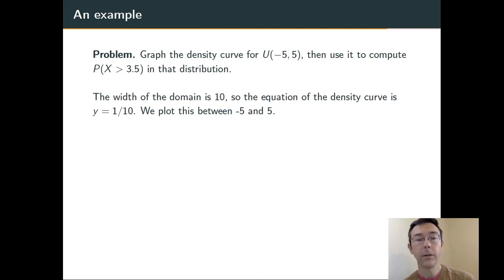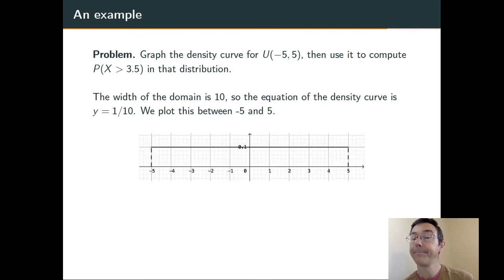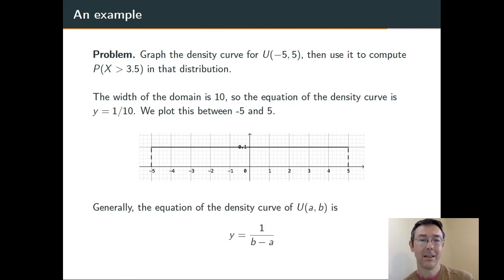So the width of the domain here is 10 from -5 to 5, so the equation of the density curve has to be y = 1/10. There it is. The width is 10, the height must be 1/10 if we're going to have an area of 1. A bit more generally, if we're talking about a uniform distribution on (A,B), then the height of the rectangle is going to have to be 1/(B-A), 1 over the width of that rectangle. That way when I multiply width by height, I get 1.